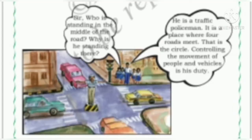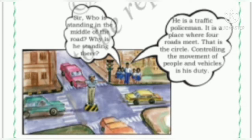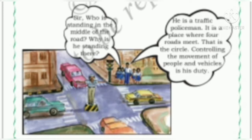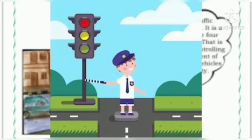You can see a picture in page 128 of our textbook. You can also see a group of students standing with their teacher. One of the students asked his teacher about the policeman who was standing at the center of the road. The teacher said that they can always see a policeman in a circle.